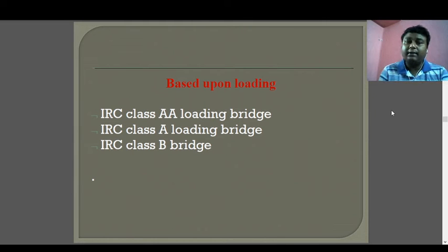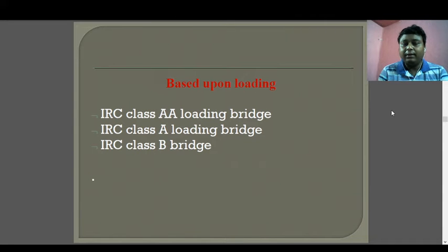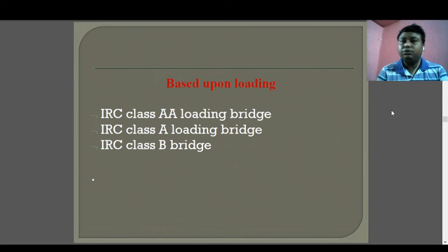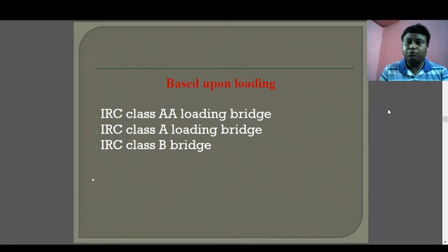Based on IRC loading, bridges are divided into IRC Class AA, IRC Class A, and IRC Class B. Details about these classes will be covered in separate classes with mathematical problems. The basic thing is that we have to design bridges based on a loading pattern — based on the load due to traffic movement of vehicles, trains, or pedestrians. These three types of loading patterns are how bridges are designed.